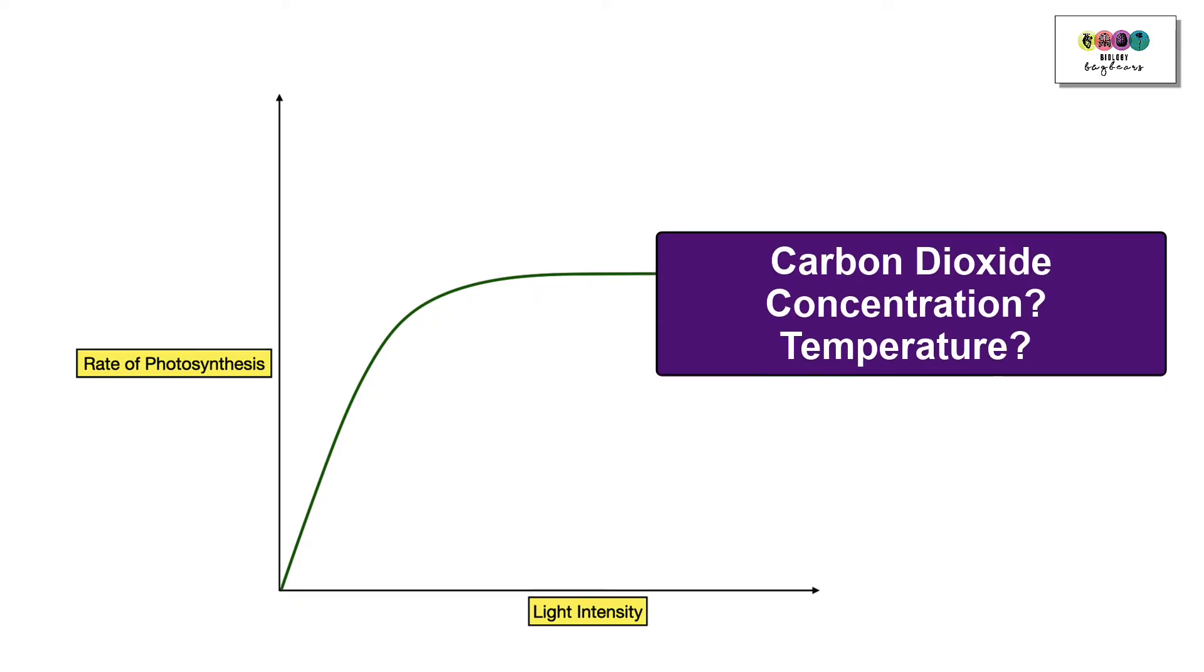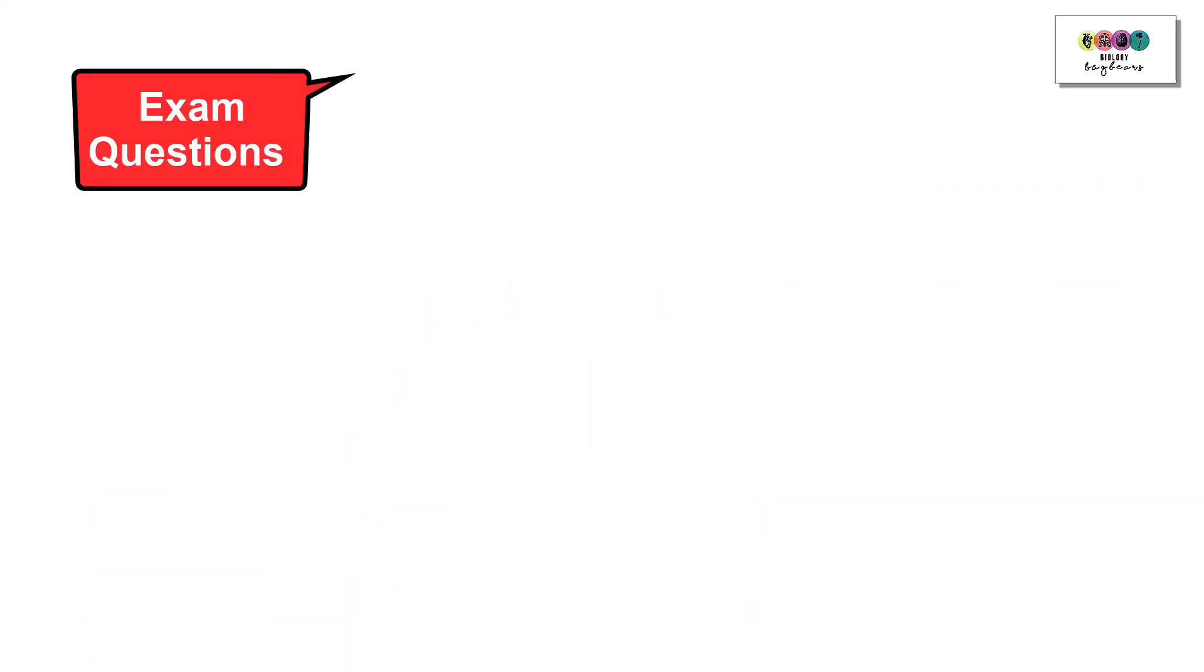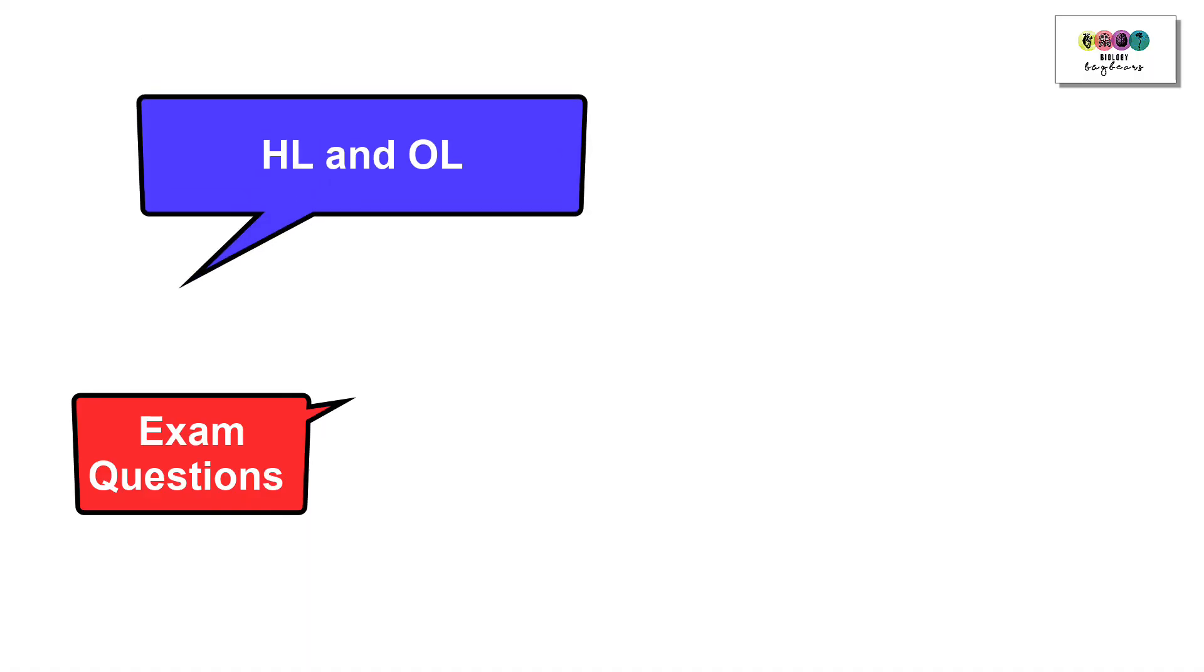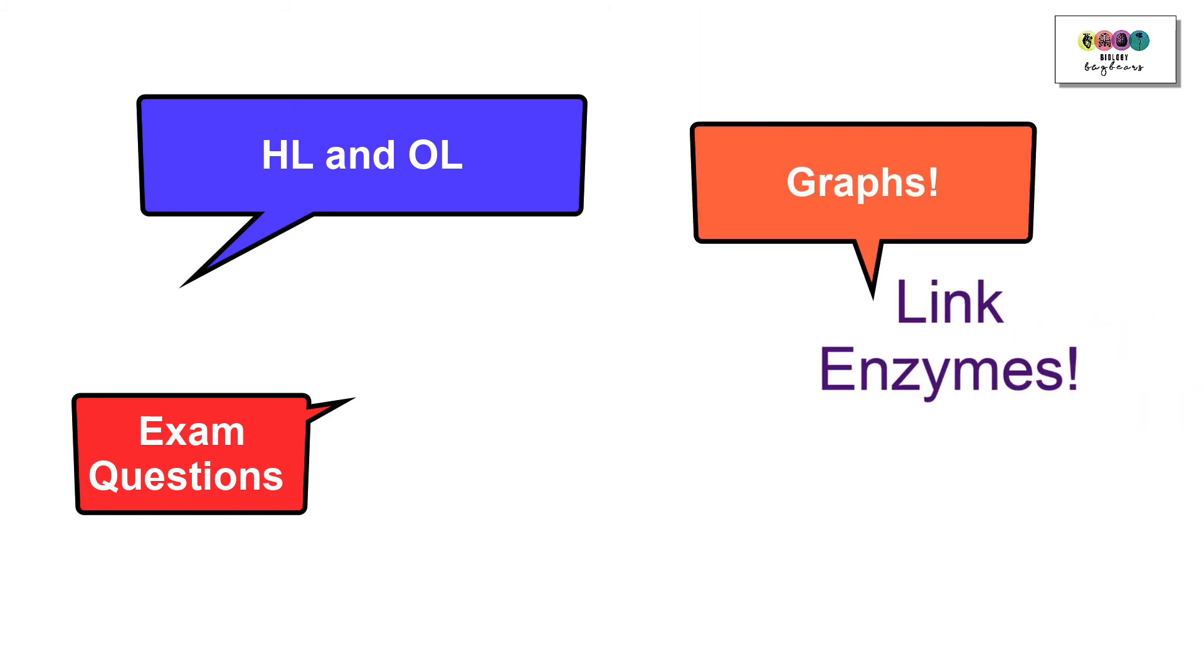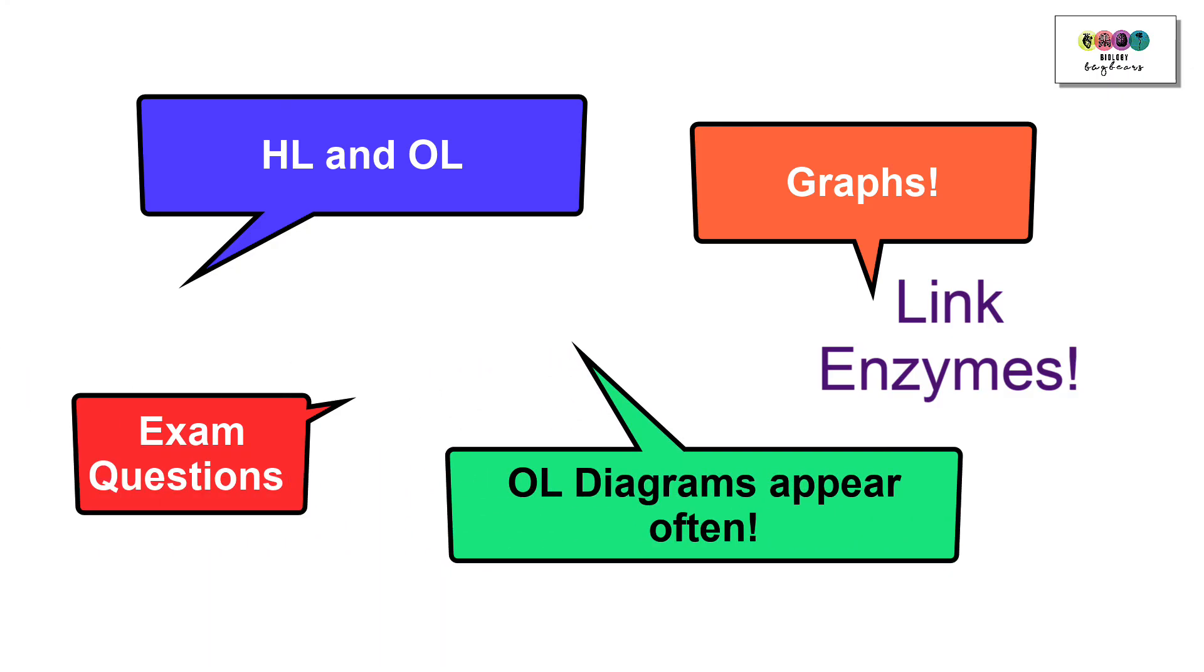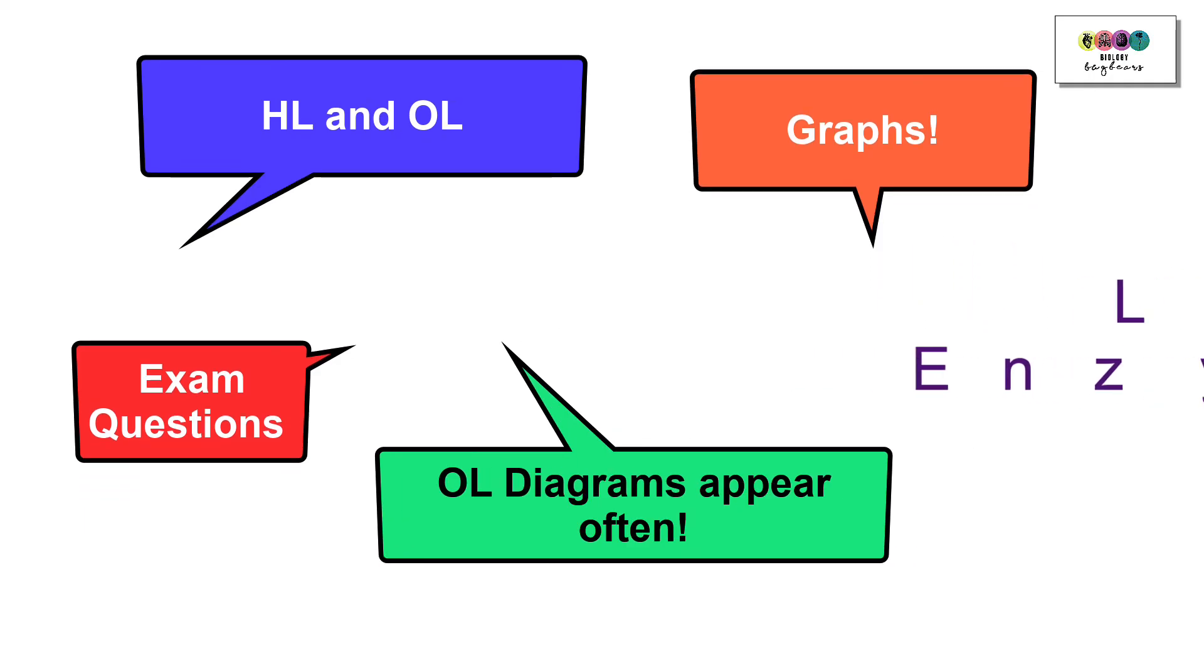It could be carbon dioxide concentration or perhaps temperature. So go and look at the exam questions, look at the higher level questions and the ordinary level questions. The higher level questions always seem to connect enzyme activity as well. Bear in mind the dark stage reactions of photosynthesis are enzyme controlled, so all of the factors that affect enzymes will have an impact on this type of practical. Take a look at the ordinary level questions because this diagram comes up a lot and it's sometimes altered. It's good to do both.